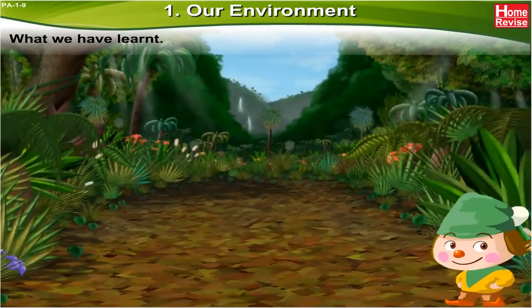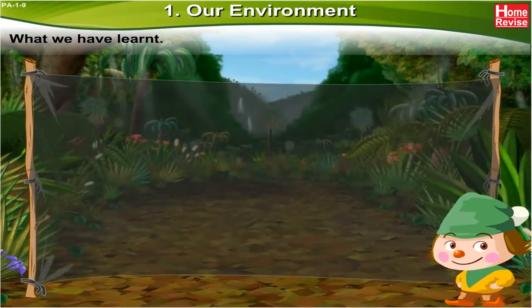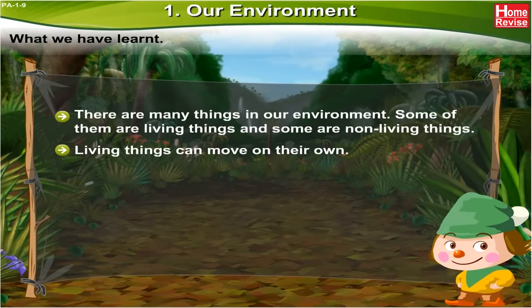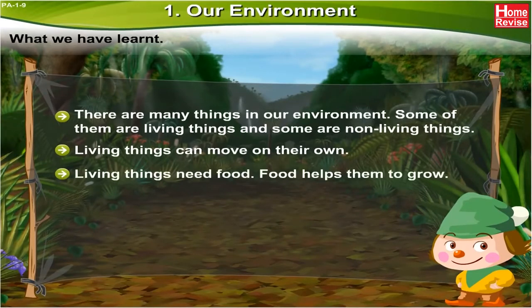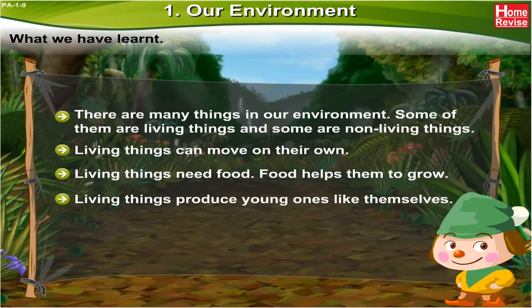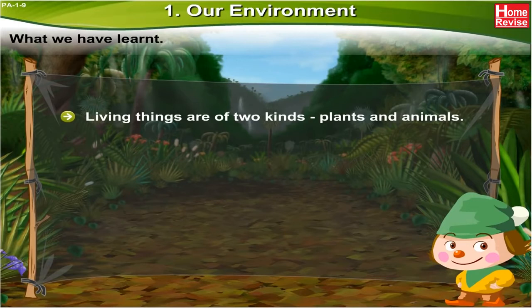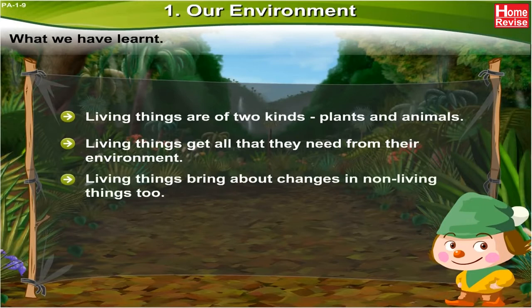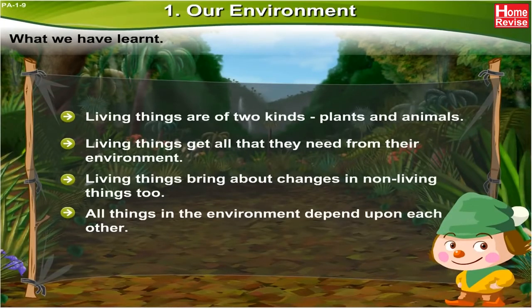What we have learned: There are many things in our environment — some are living things and some are non-living things. Living things can move on their own, they need food, and food helps them grow. Living things produce young ones like themselves. Living things are of two kinds: plants and animals. Living things get all that they need from their environment, and living things bring about changes in non-living things too. All things in the environment depend upon each other.